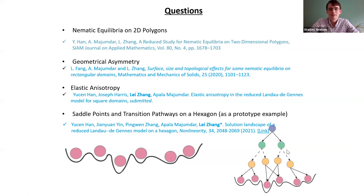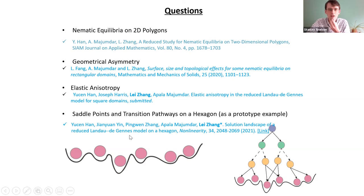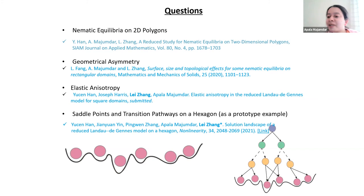Let's thank the speaker for that very interesting talk and open the floor for questions. One question that came to mind: is there any hope of looking at three-dimensional polyhedra and trying to get this same nice list of states? For a cube, certainly yes. I actually worked on a cube when I was a PhD student, in a simpler framework called the Oseen-Frank theory, and we did a lot of work on the cube.